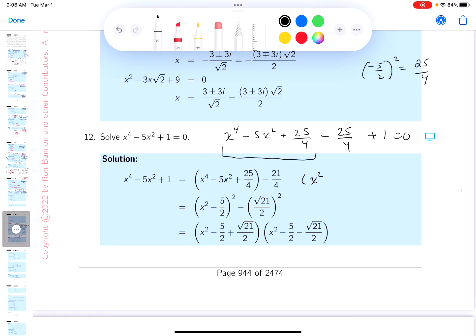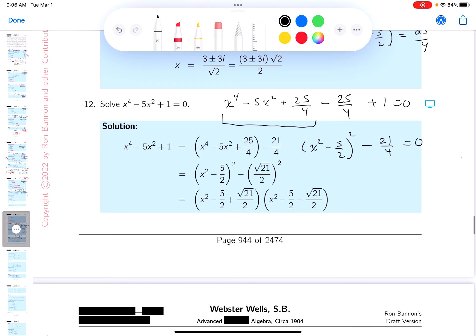x squared minus 5 over 2 quantity squared, and then what do you get? Well, let's see. That's going to be minus 21 quarters equals 0. What am I going to do now? I'm going to factor.